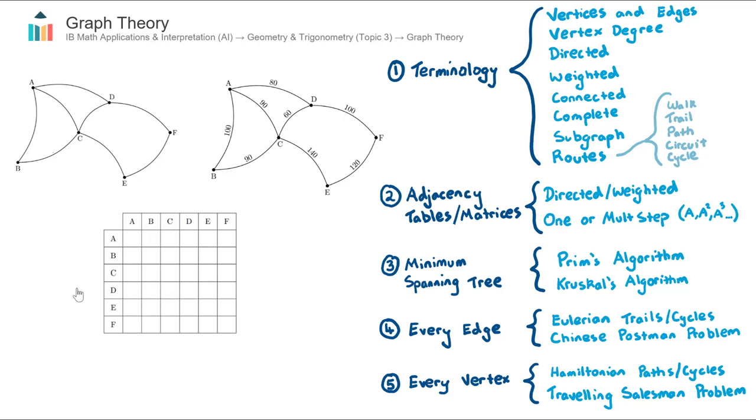So in this case here, in this blank table here, for graph theory, we always have from on the rows and to on the columns. Now looking at this graph here, if I want to go from A to A, is there an edge that does that? Well, no, there's not.